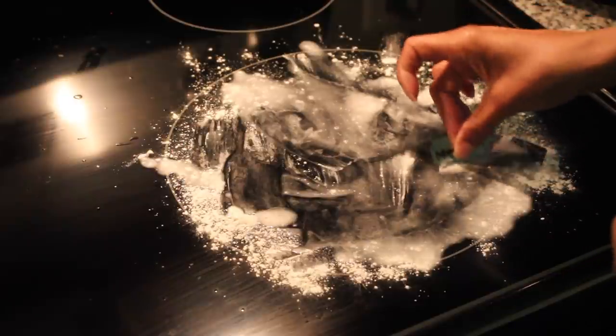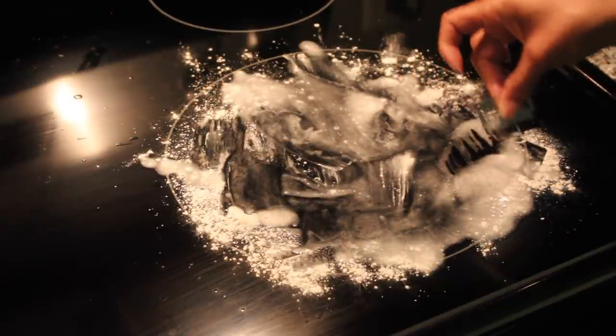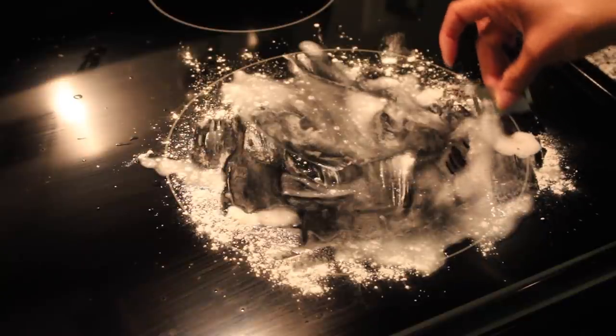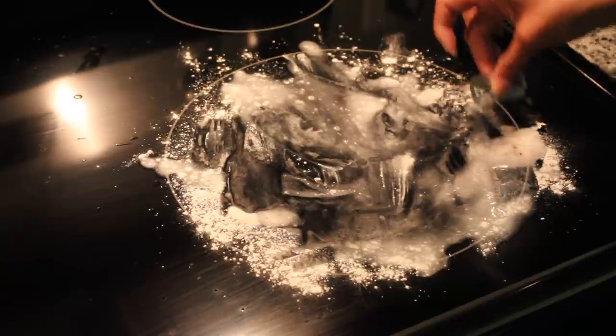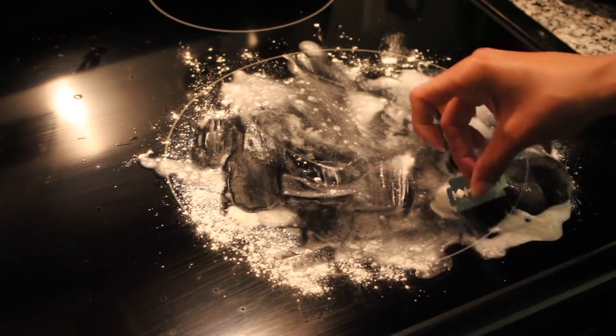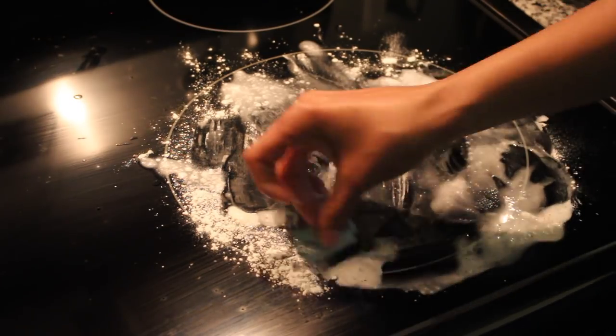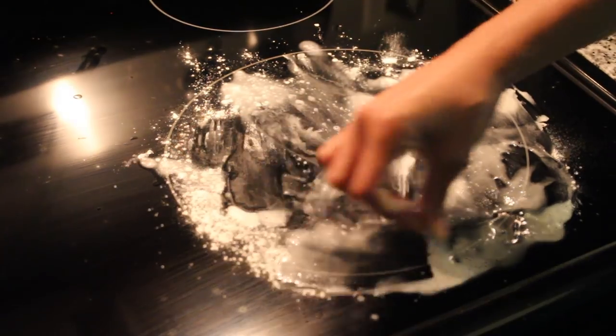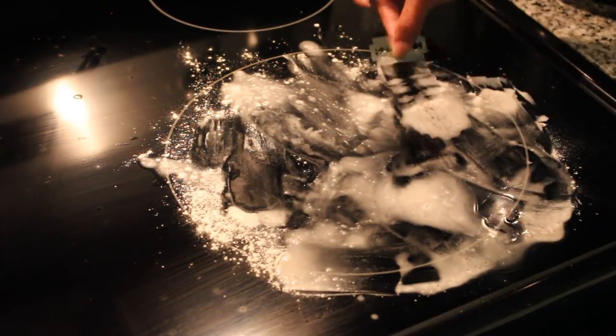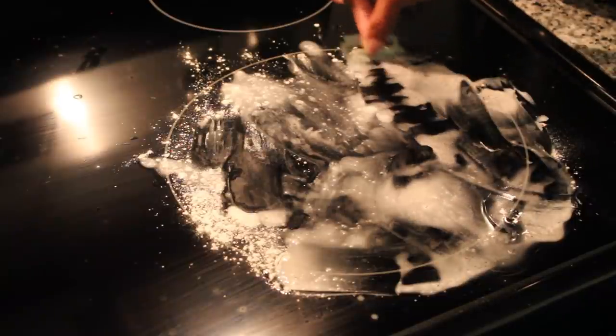And then you're going to gently start scraping the surface. Now you do have to be careful because glass stove tops have a tendency to be scratched. I don't know if you could tell in the beginning, but we already had a scratch on this particular surface. I honestly don't even know where it came from because this is the first time I'm actually doing this, but you just want to be careful when you're scraping. This process is going to take a while. It took me like 20 to 25 minutes, but the end result is worth it.